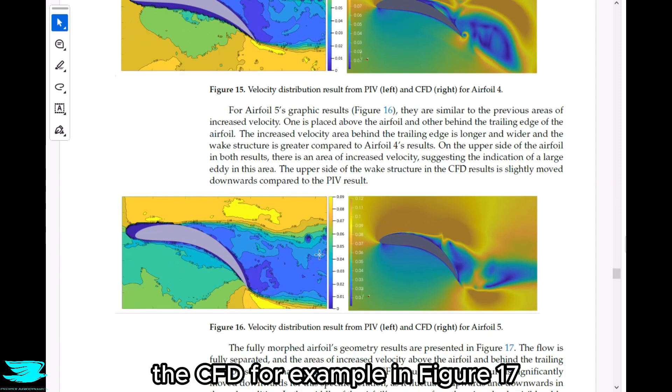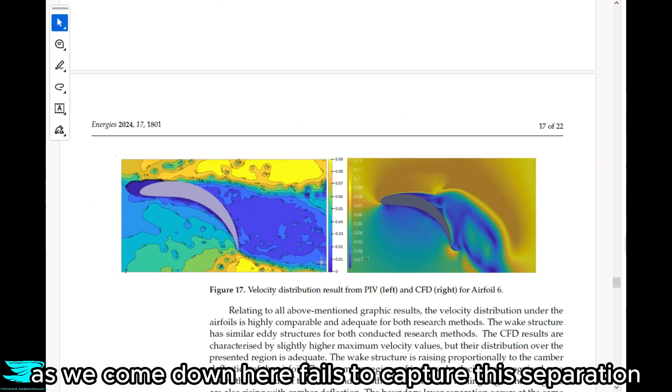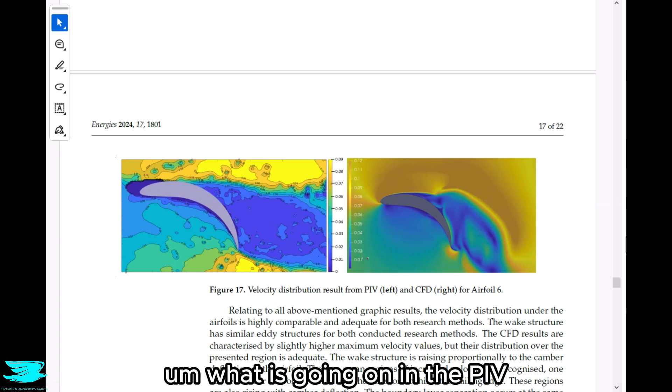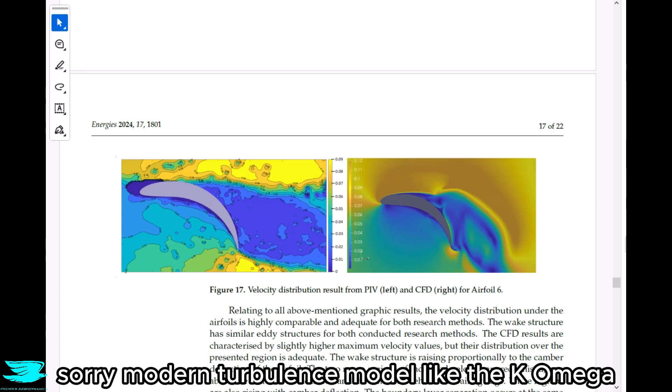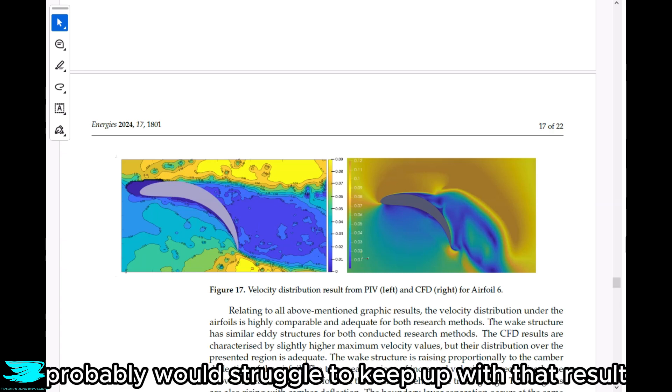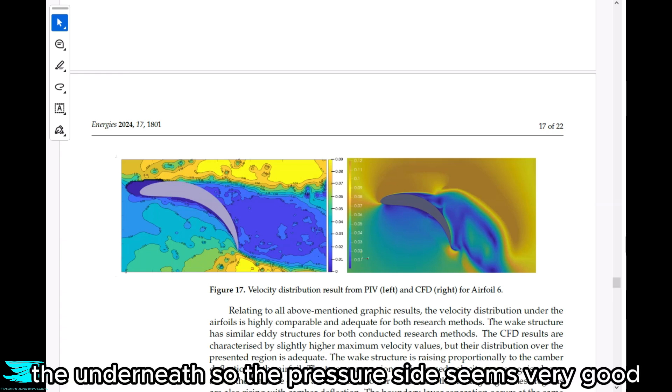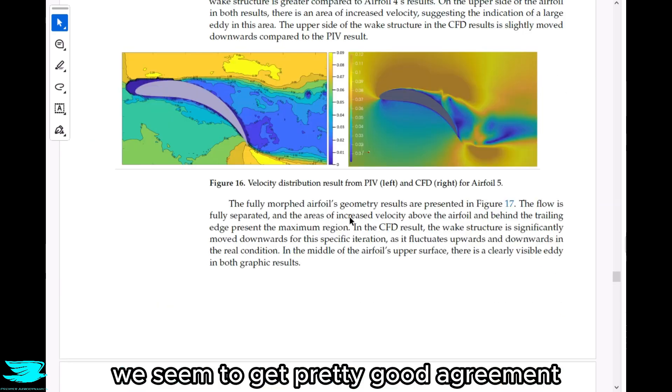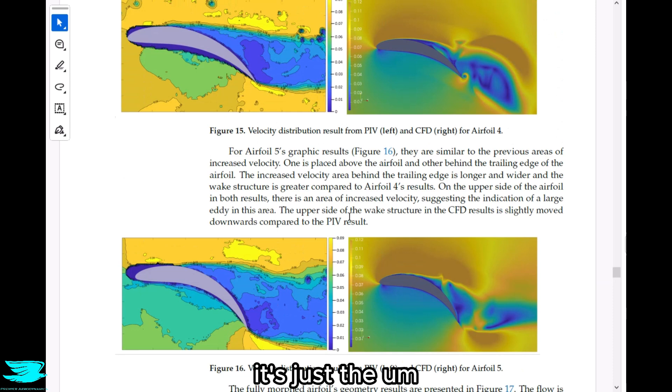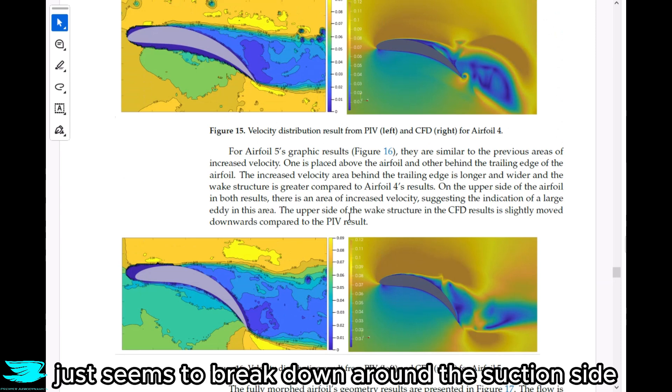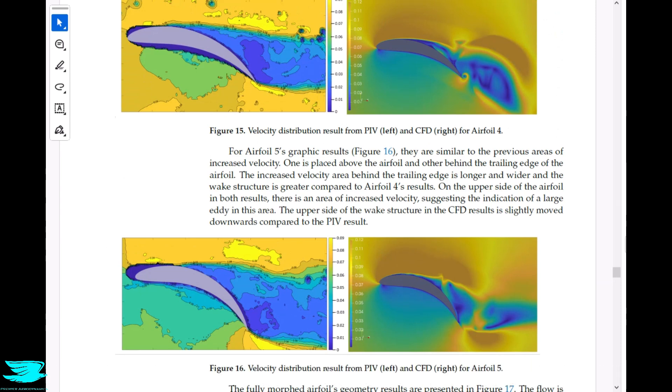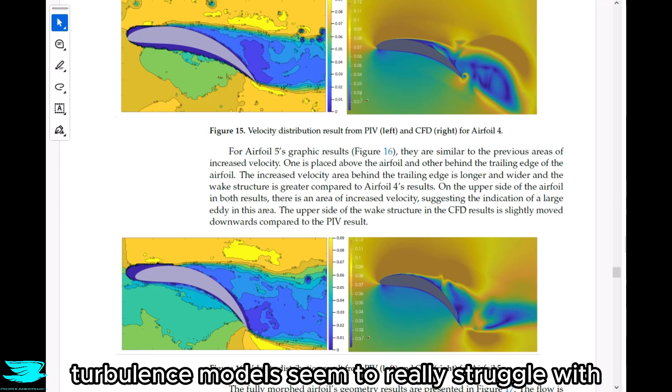Anyway, the CFD, for example, in figure 17, as we come down here, fails to capture this separation around the leading edge, and I'm not surprised. What is going on in the PIV seems very exotic, and even a modern turbulence model, like the K-Omega SST, probably would struggle to keep up with that result. The pressure side seems very good between the CFD and the PIV. We seem to get pretty good agreement among the higher angles of attack. It's just the top surface that is kind of letting everything down. So the CFD just seems to break down around the suction side, and that's because of the adverse pressure gradient, which turbulence models seem to really struggle with.